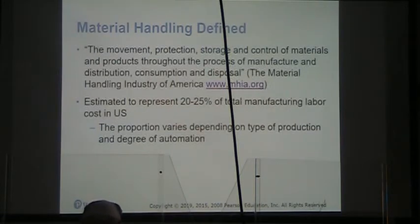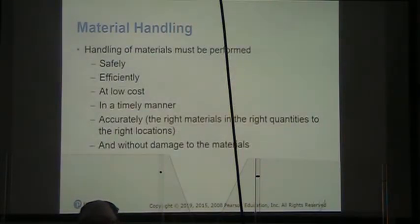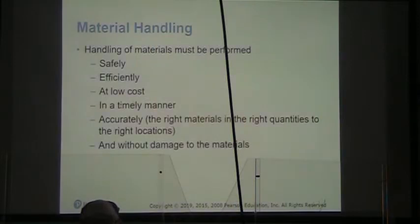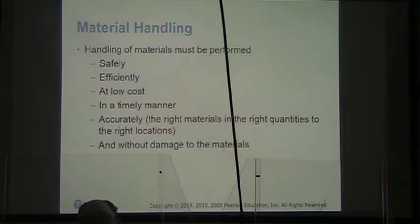However, in my experience, that may be a low estimate because transportation is one of the great wastes identified in lean production. When we handle materials, we want to be safe, efficient, and do it at a low cost, in a timely manner, and accurately — to get the right materials in the right quantities to the right location. That just-in-time ideal we talk about in lean production. And we want all of this to be without damage to our materials or products.